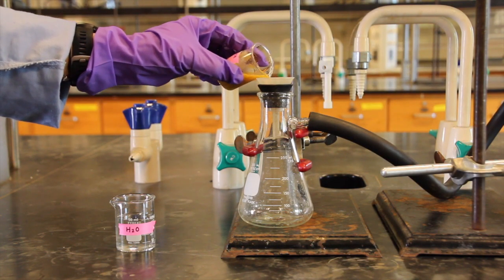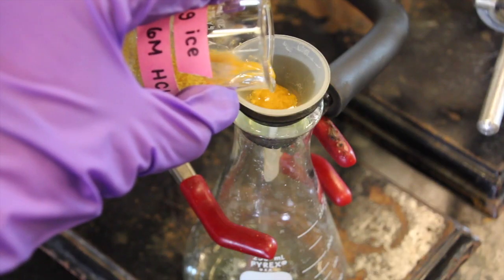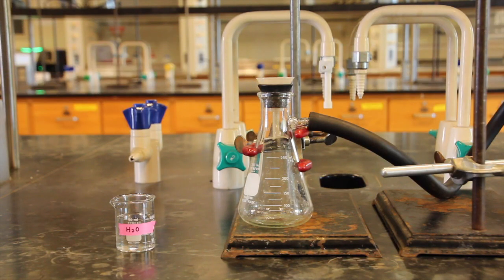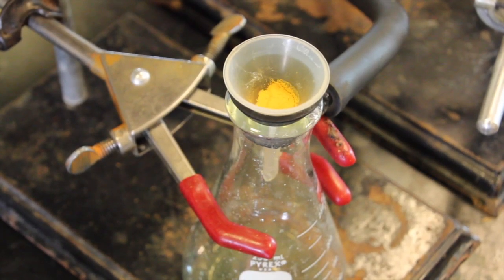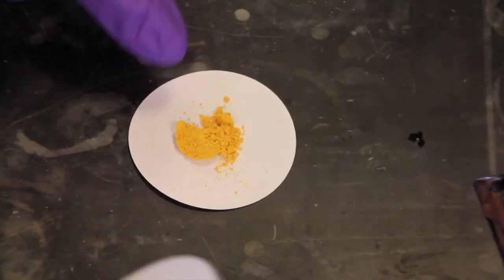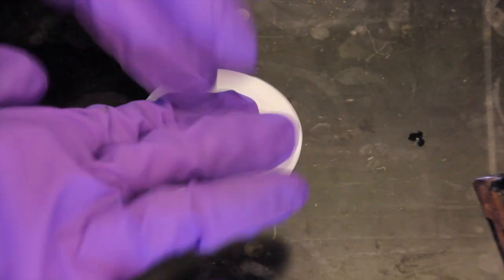Next, vacuum filter the orange ferrocene crystals using a Hirsch funnel and wash the crystals well with water. Remove the crystals from the funnel and press them between two sheets of filter paper in order to further dry them.